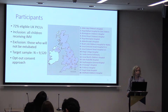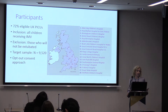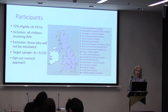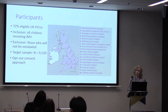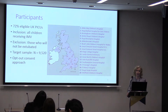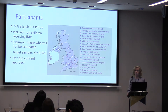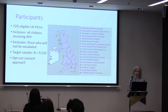Regarding the PICO components and participants: we have 18 paediatric intensive care units from England, Wales, and Northern Ireland — 72% of eligible UK PICUs. We include all children receiving invasive mechanical ventilation in an ICU, excluding those who will die very shortly or have a tracheostomy tube. Our target sample is about 9,500 and we have exceeded that to date. We are using an opt-out consent approach, approved because it's a low-risk study.